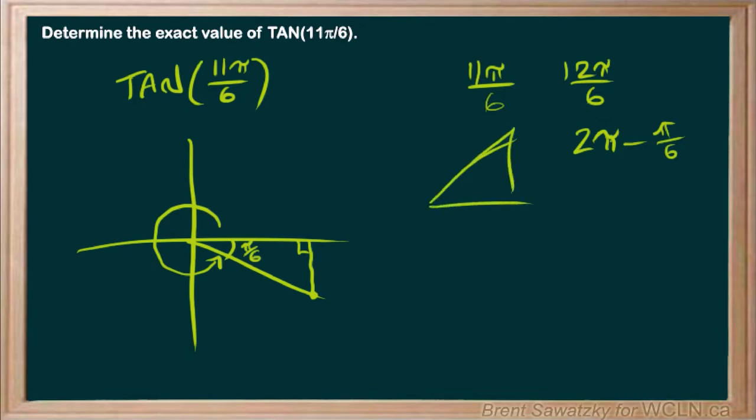where we have a 30, 60, 90, or a pi over 6, and a pi over 3, and a 90 there. And the pi over 6, that's going to be our smallest angle. So, opposite to that would be a 1. And then we have a 2 and a root 3.